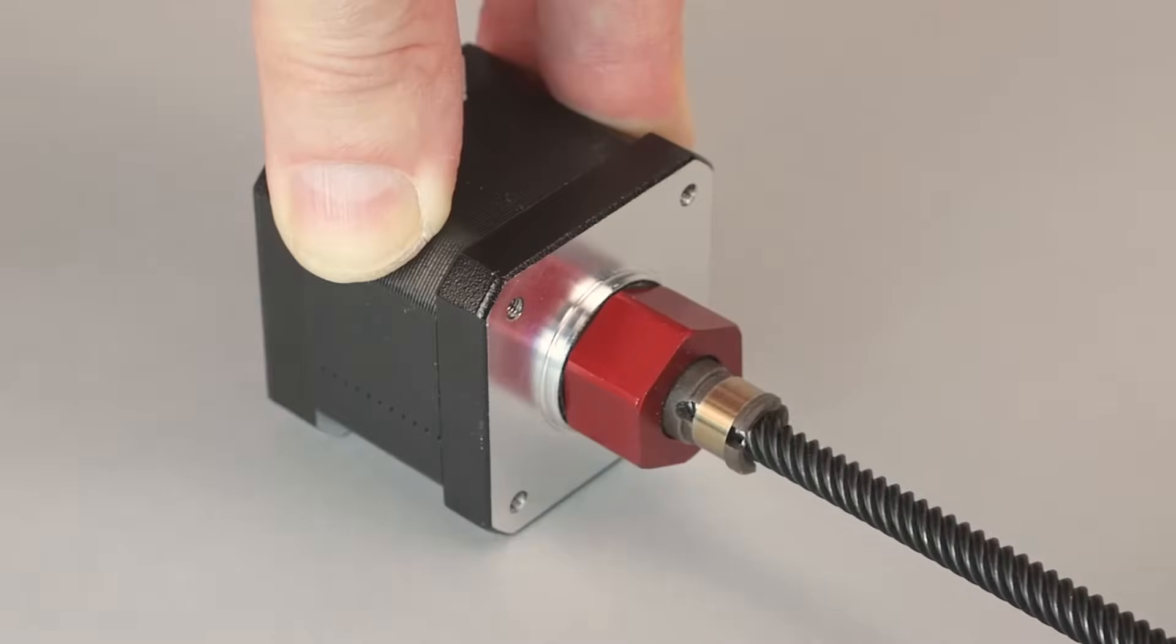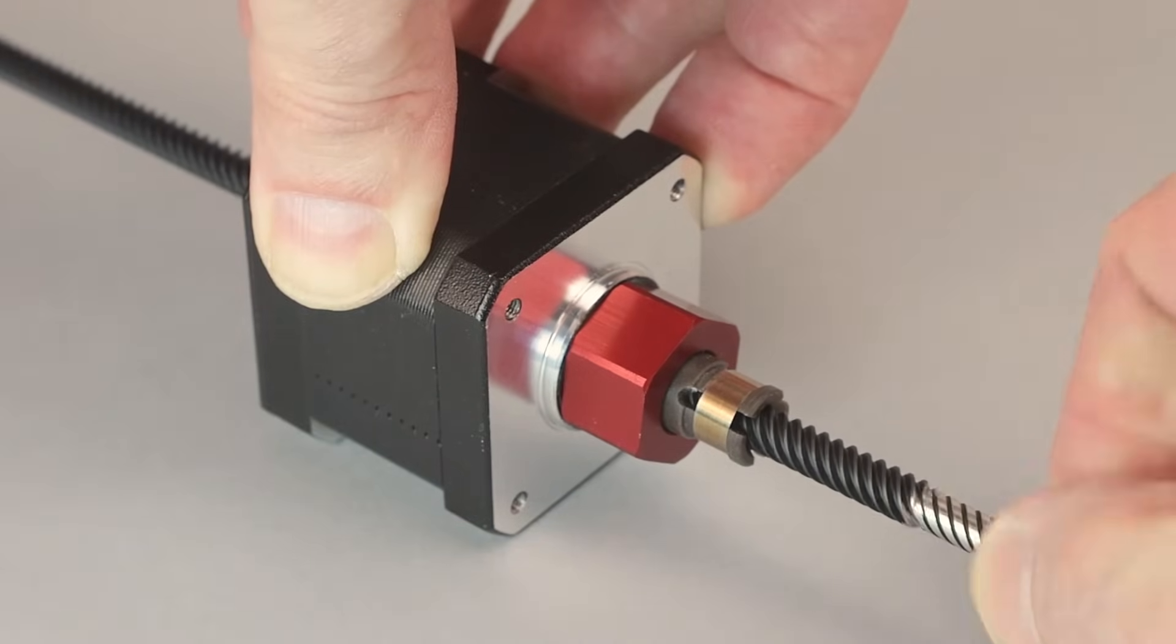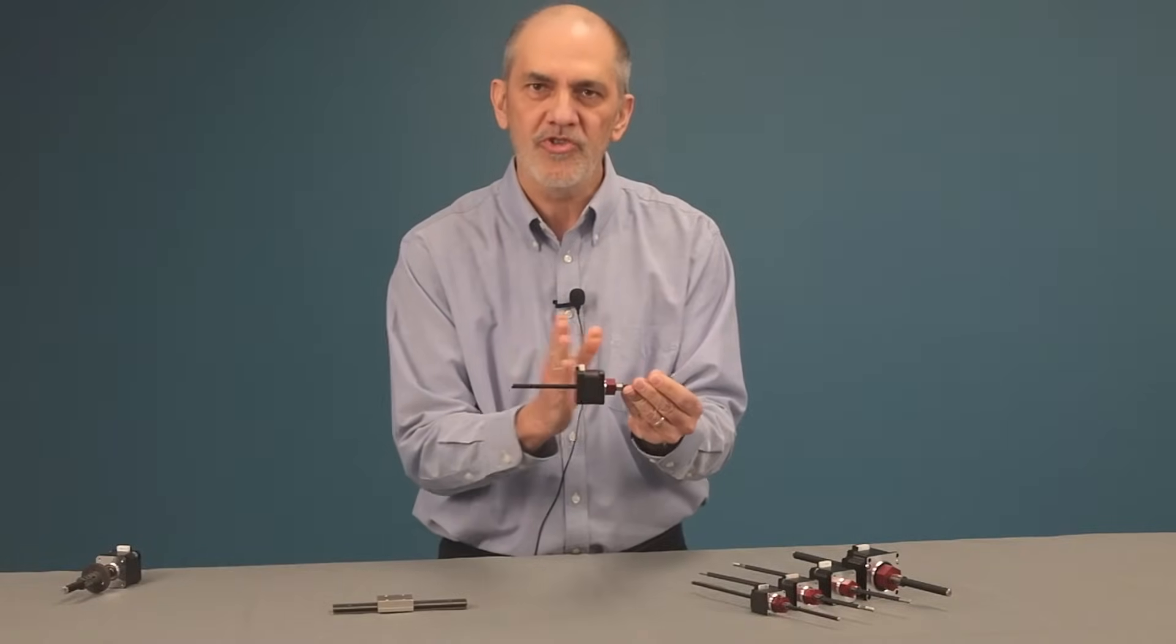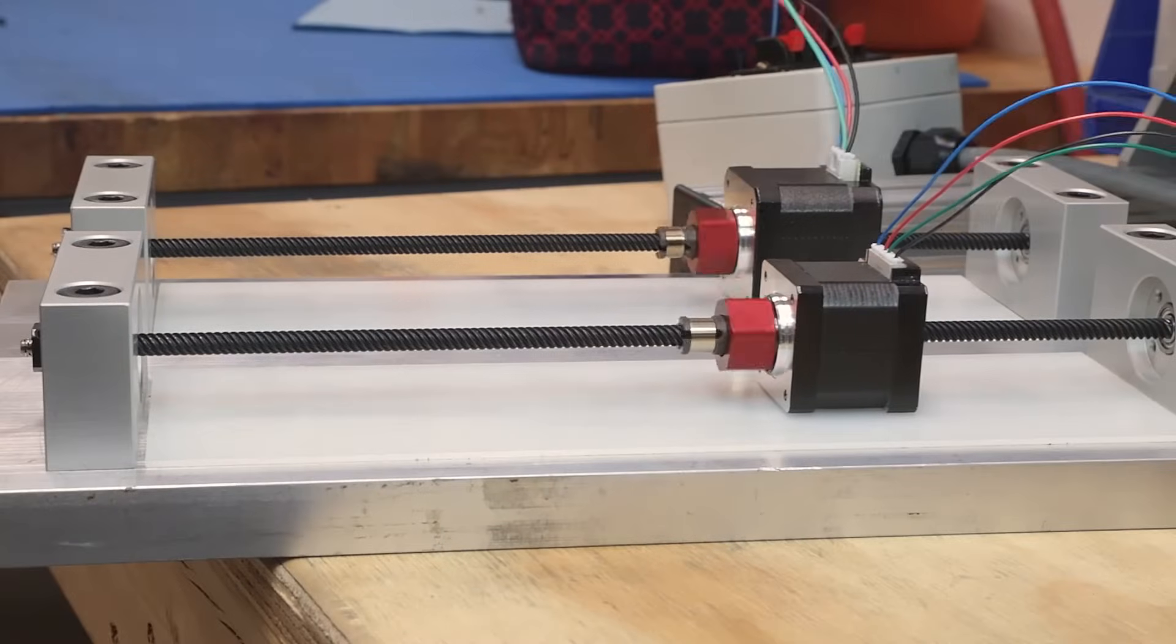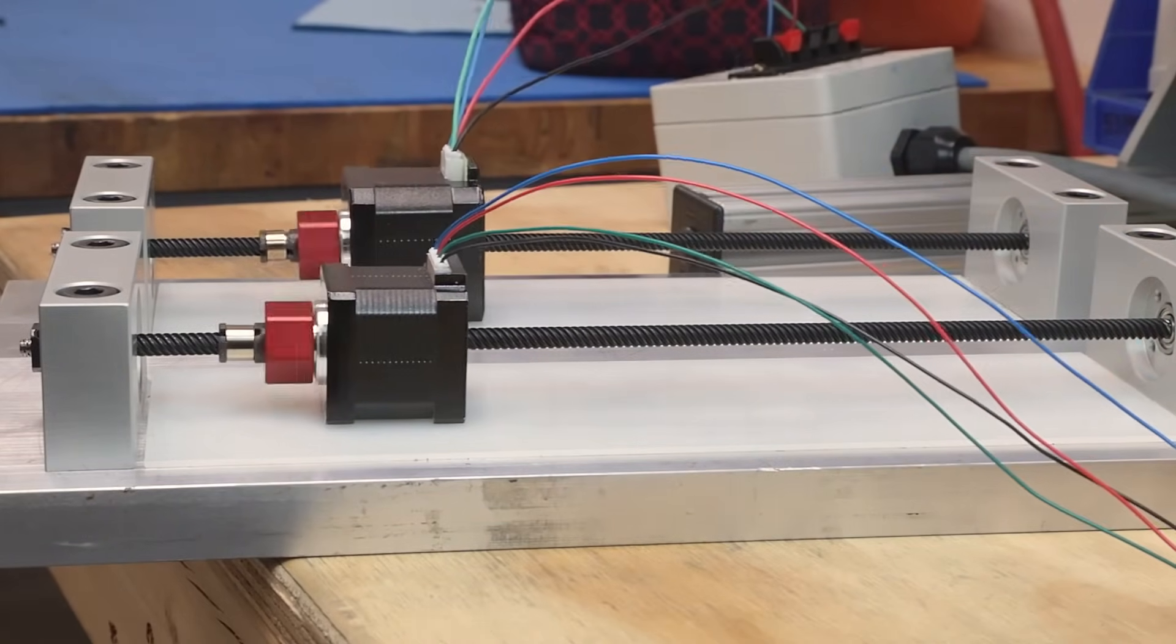What makes a non-captive actuator unique is that it allows the screw to pass completely through the motor. People will use this in places where they need shorter stroke applications. The screw ends are typically fixed and then the motor will be what moves.